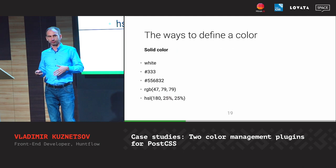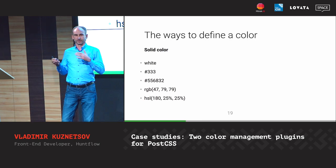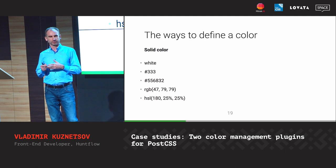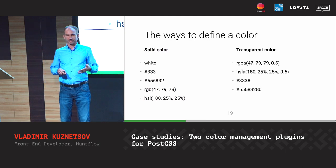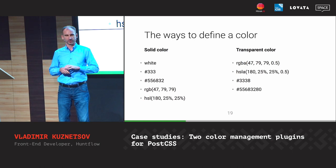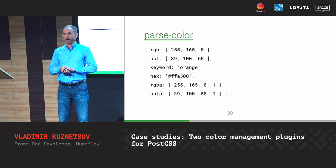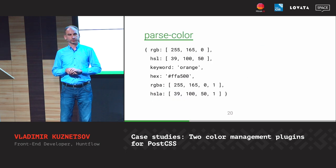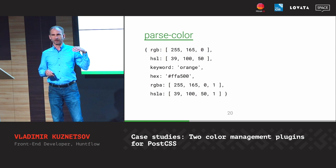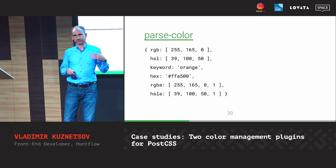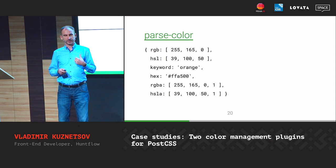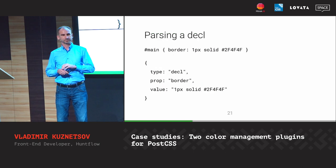There are different ways to write a color: it can be a keyword, a hex value, or a color function, and also transparent colors. We found a library to convert one color form to another color form — so if you have a color function, you can get all possible representations of that color. That helps a lot.